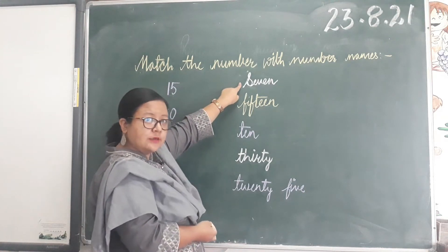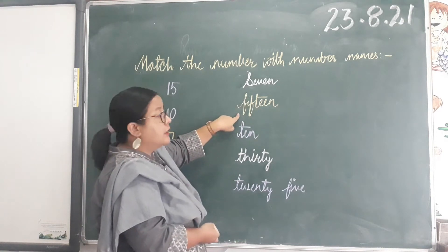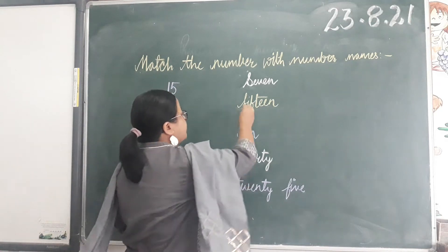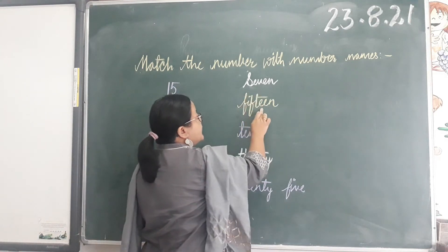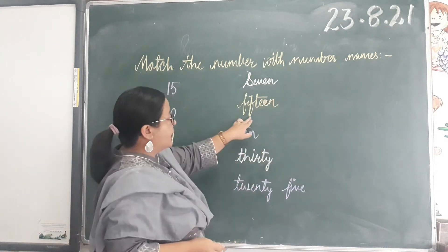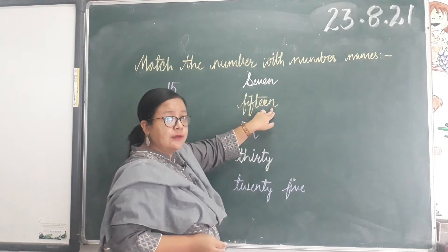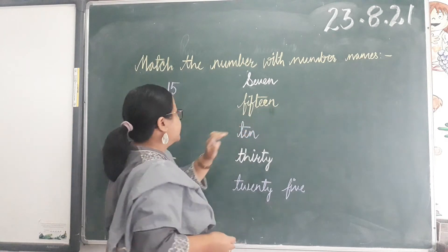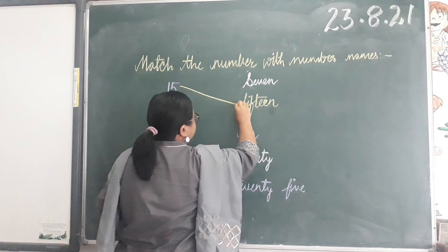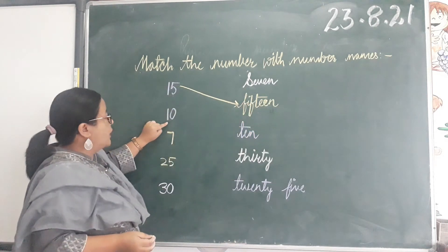Now find out where is 15. Is this 15? No. Is this 15? Let's spell it - F, I, F, T, E, E, N - fifteen. Yes, this is the right answer. So what you do is you match this number with the number name.